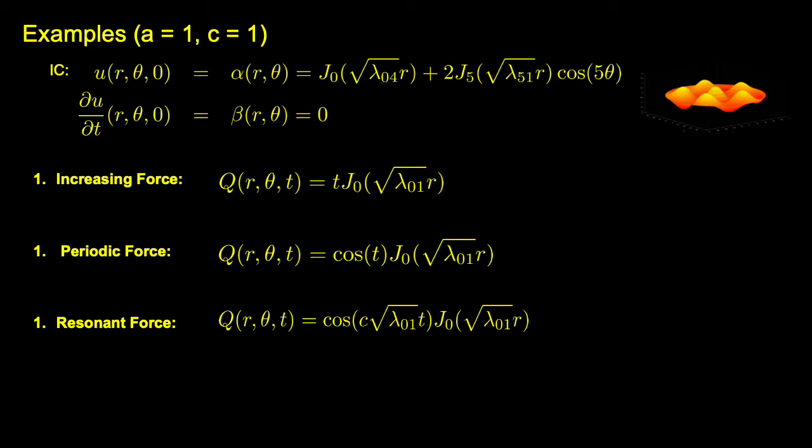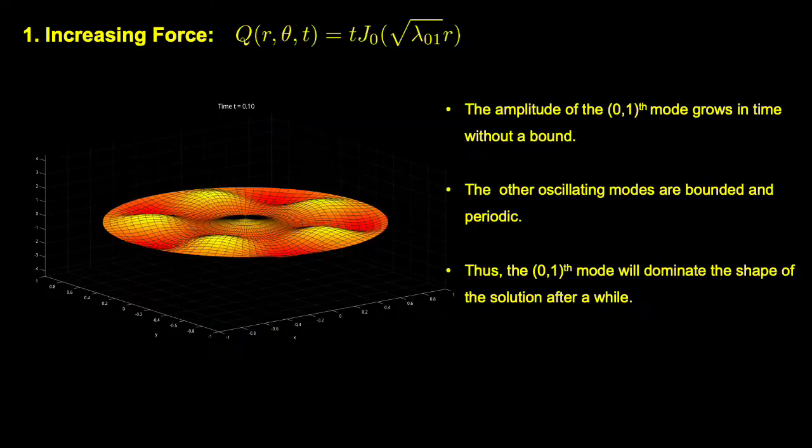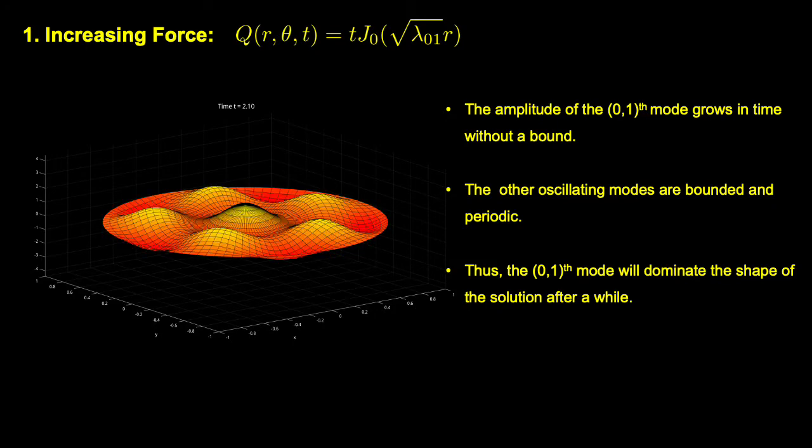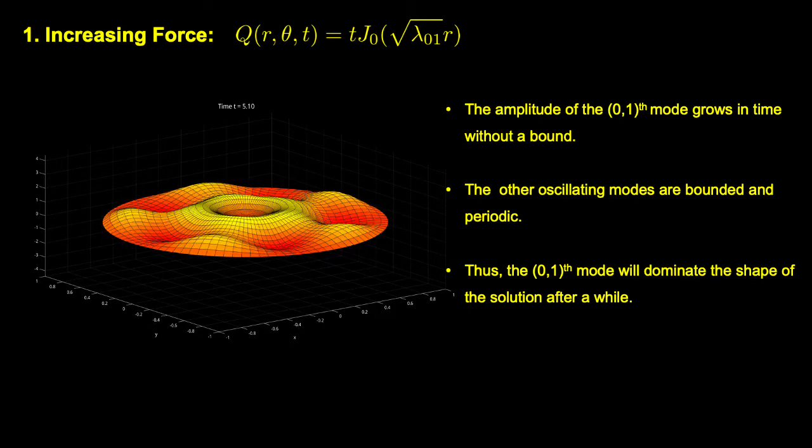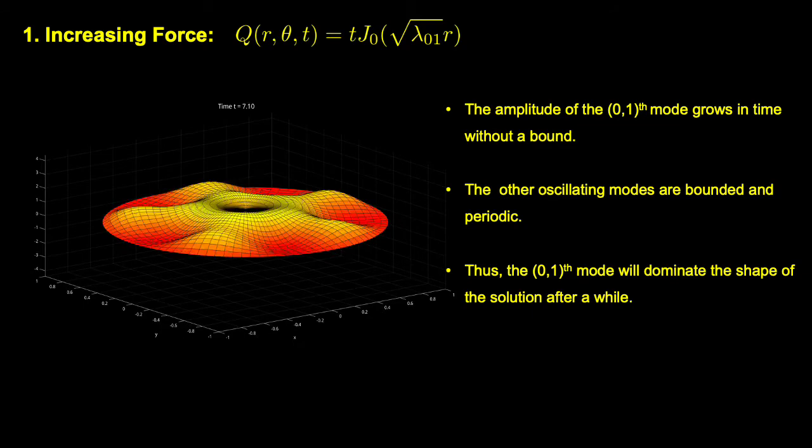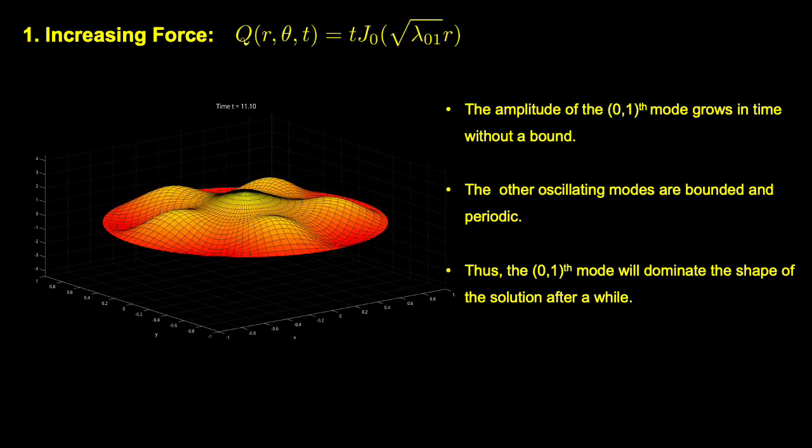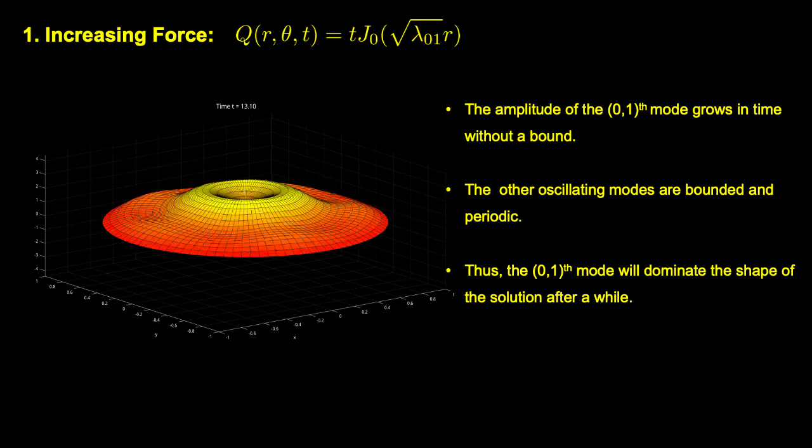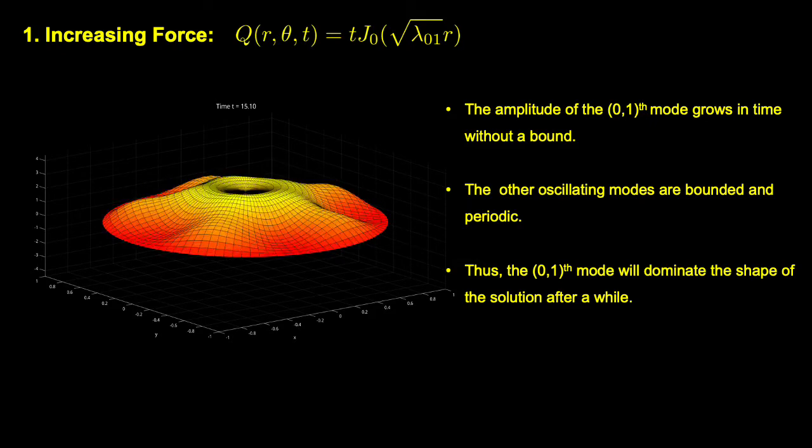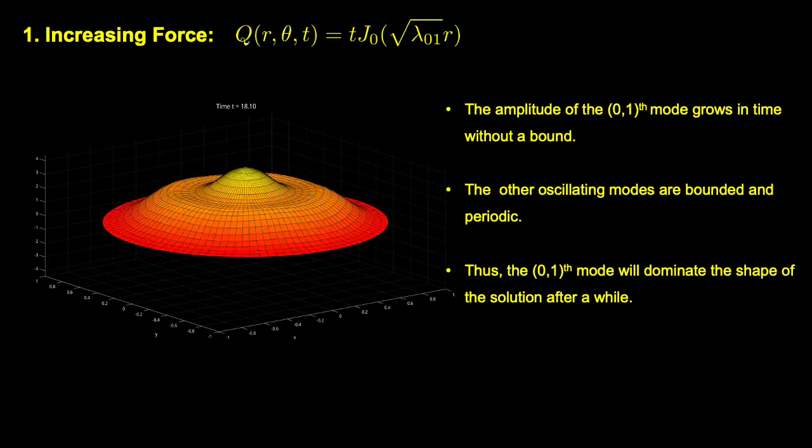Recall that J_0(sqrt(lambda_01)r) is the 0-1 mode, and it looks like a ball upside down. In the example of increasing force, the amplitude of the 0-1 mode grows in time without a bound. The other oscillating modes are bounded and periodic. Thus, the 0-1 mode will dominate the shape of the solution after a while.